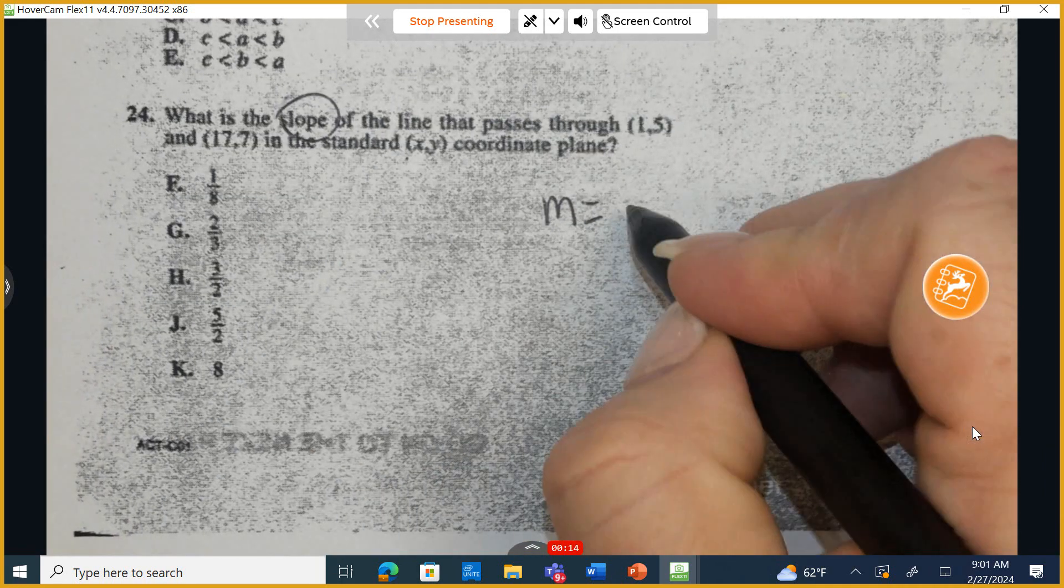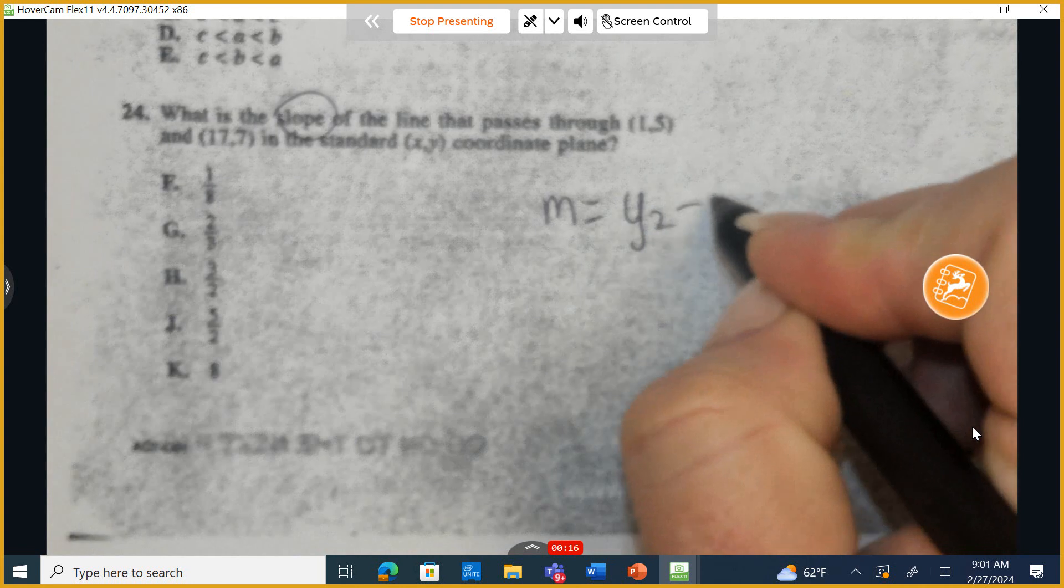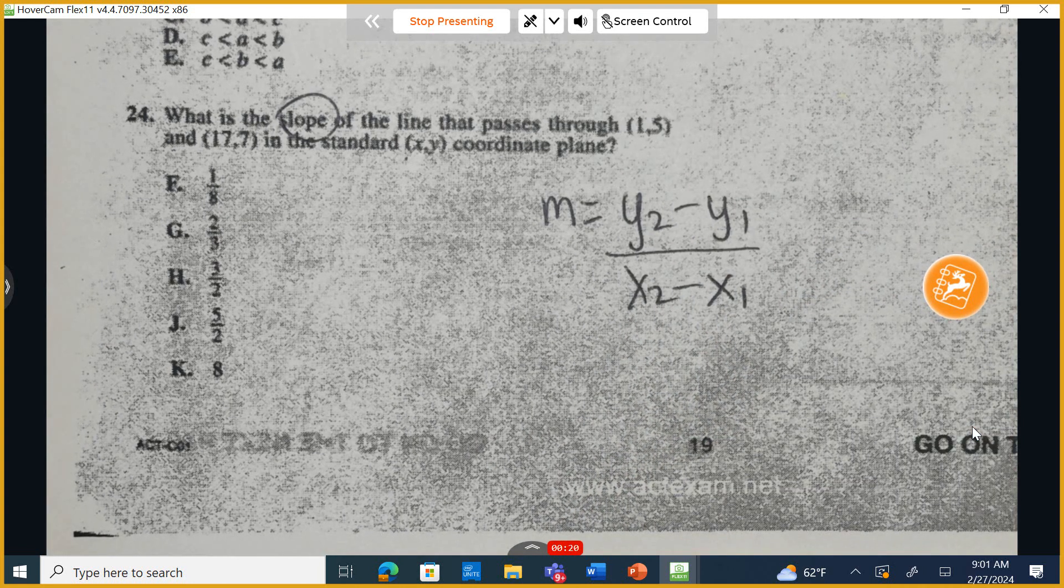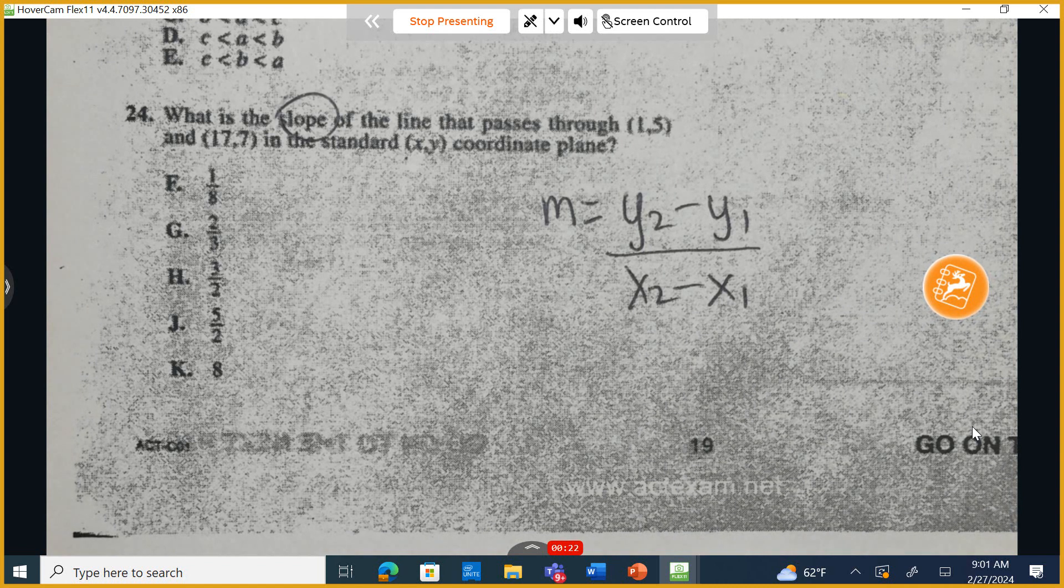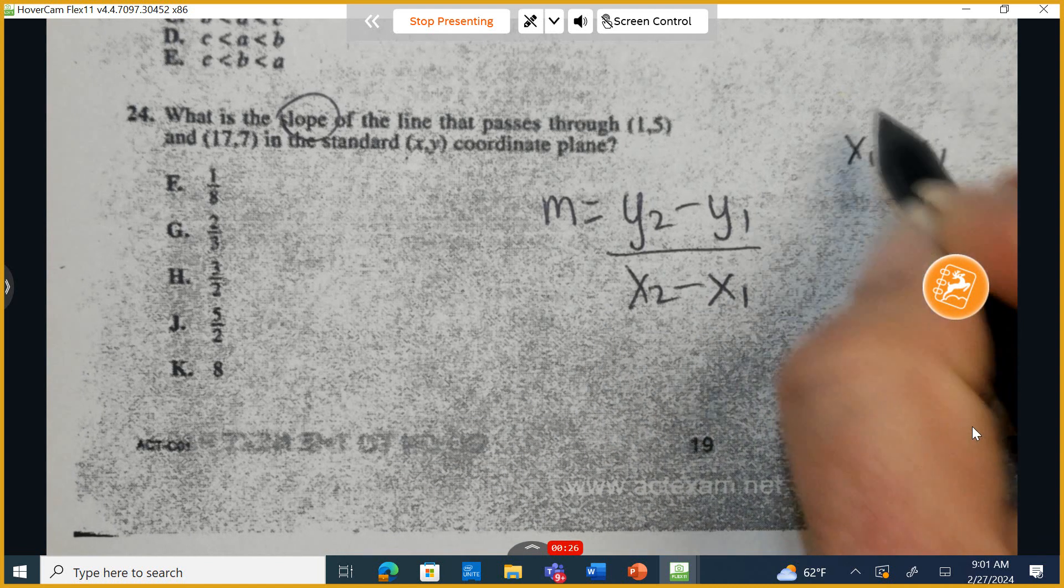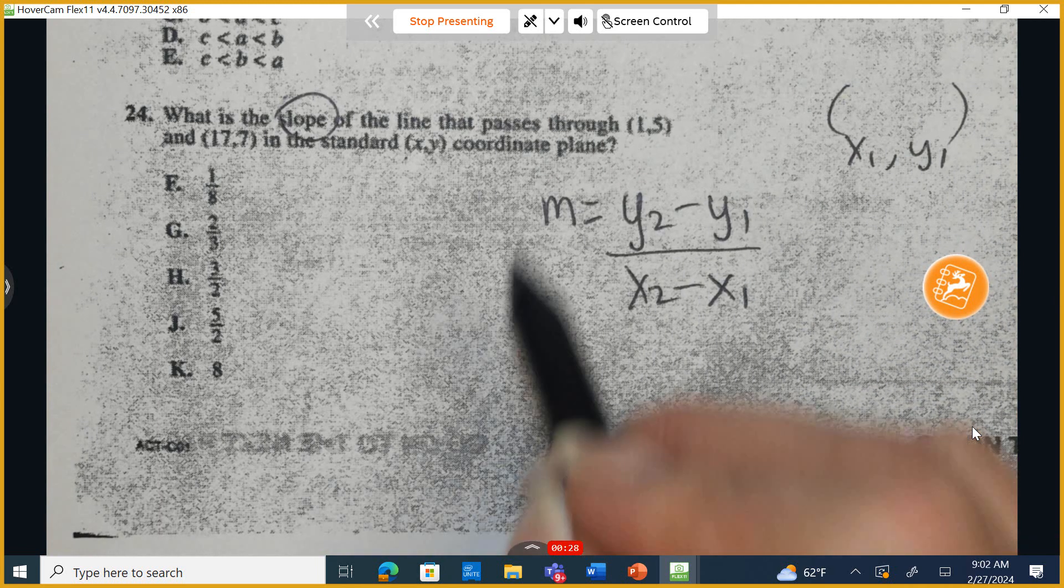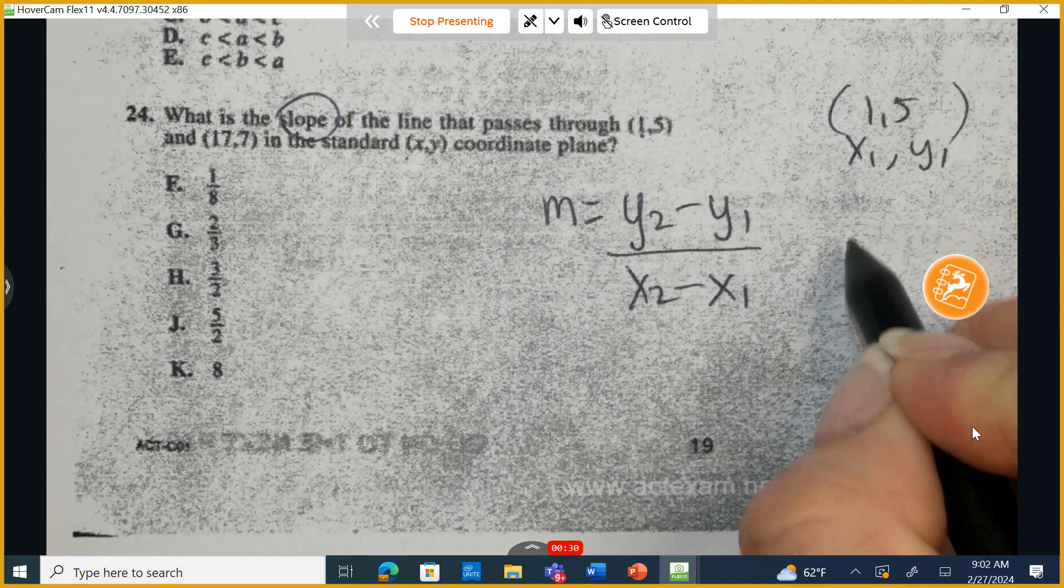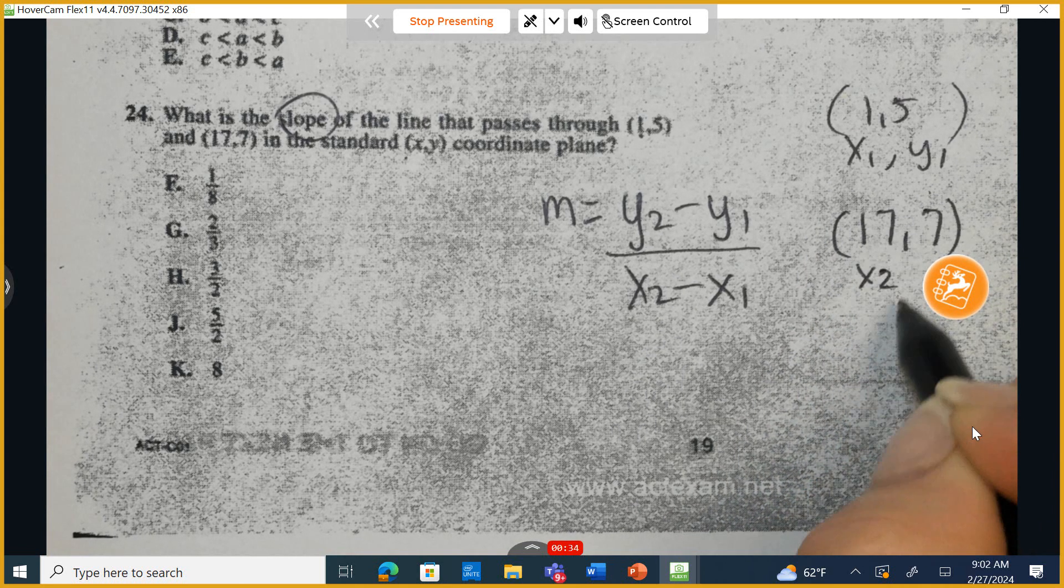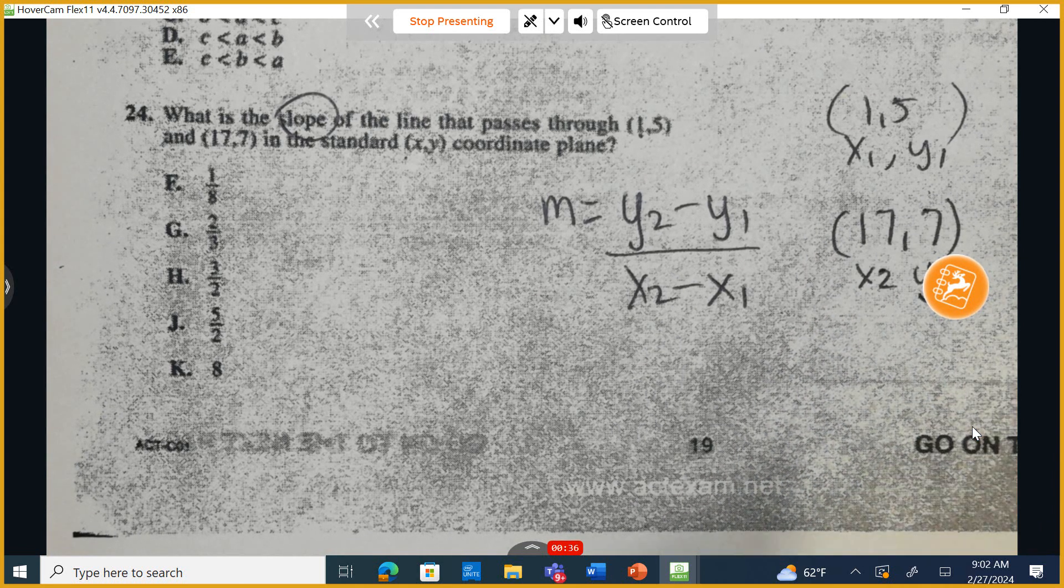And so we have two points and to find the slope we're going to use this formula: y sub 2 minus y sub 1 over x sub 2 subtract x sub 1. Now what are these sub numbers of 1 and 2? So x sub 1 and y sub 1 are going to just represent the very first point they give us. So first point is 1 and 5. Second point is 17 and 7. So that's what we'll refer to as my x sub 2 and my y sub 2.